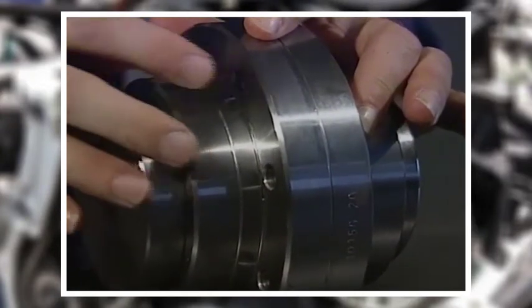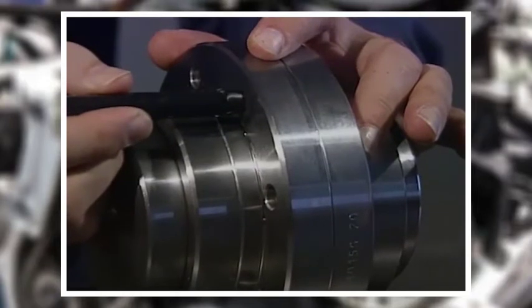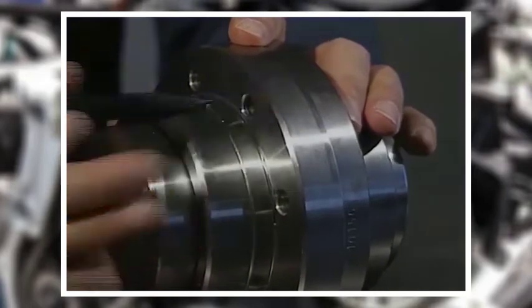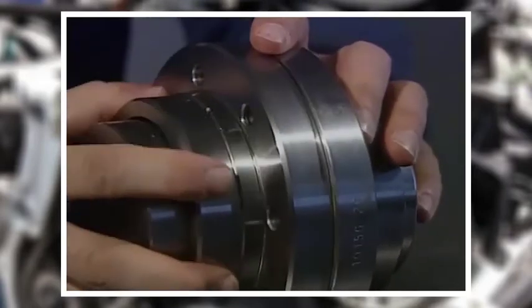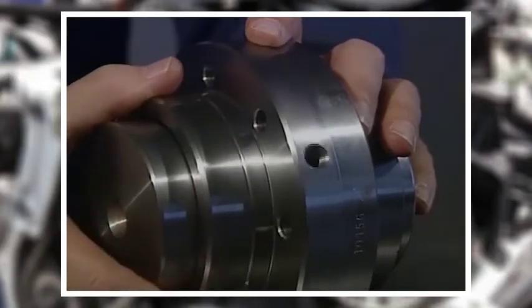The gear coupling can also be assembled with shear pins between the halves. Applying too much rotary force or torque to the coupling shears off the pins. The coupling halves, along with the shafts they're attached to, run free. A gear coupling with shear pins is used as a torque limiting device.